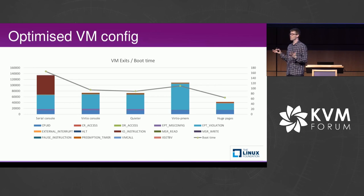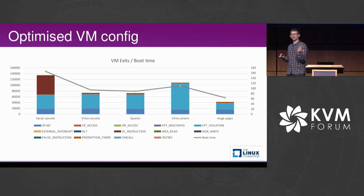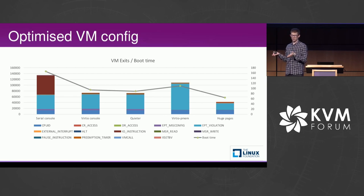Further analysis confirmed the idea I had — that VM exits were the cause of the slowness during boot time. The number of VM exits drops as we move through from the worst case with the serial port doing PIO exits, then the exits relating to memory, and then all the way through to huge pages where the amount of VM exits is significantly reduced.